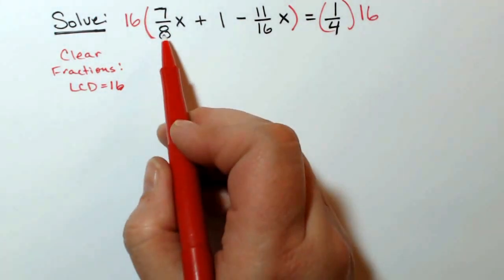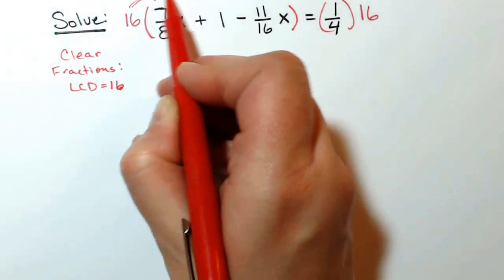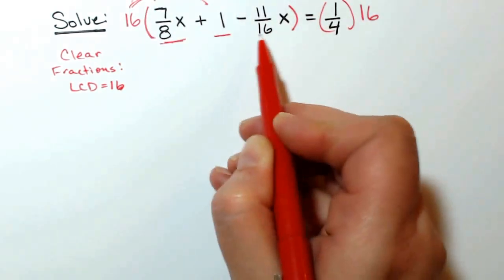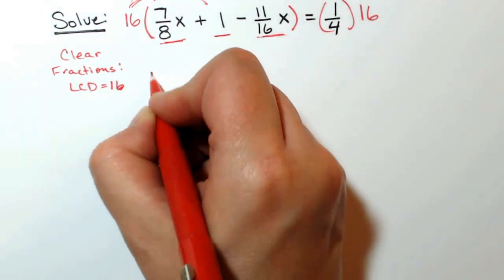The left side of the equation has several terms, so I will be distributing the 16 and multiplying each term by 16. So my next step will show that.